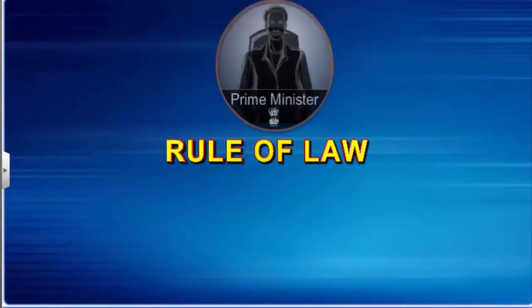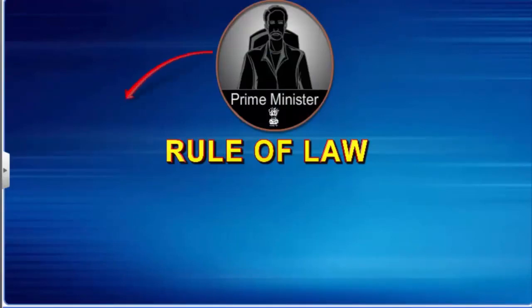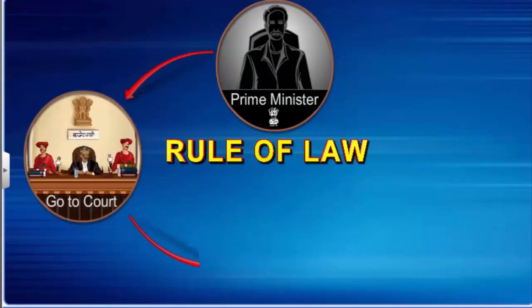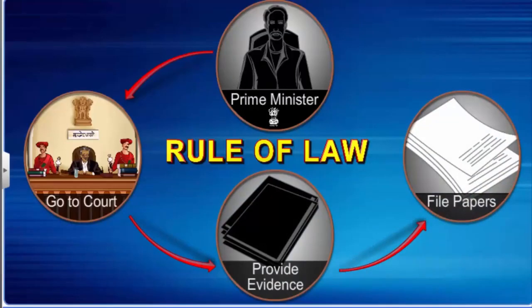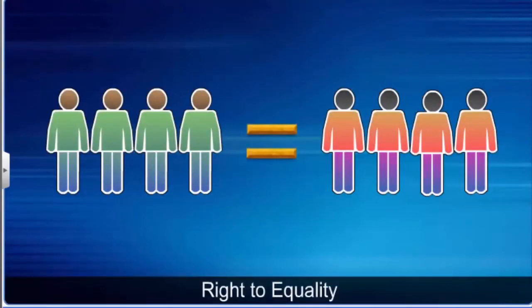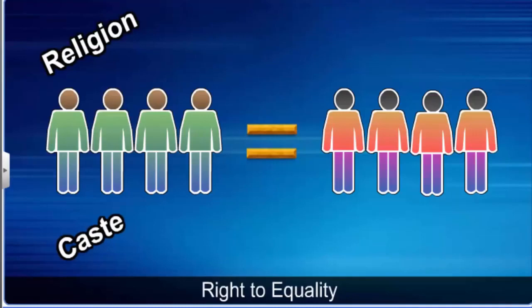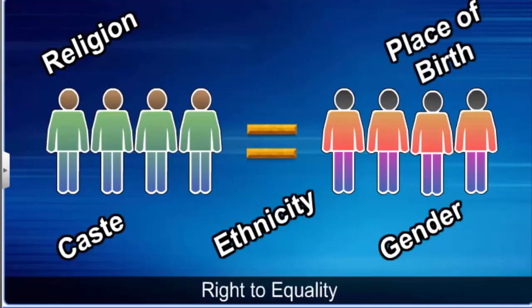According to the rule of law, even the prime minister of the country, in case of charges against him, will have to go to court, give evidence, and file papers without any special treatment. The right to equality also states that the government cannot discriminate among citizens on the grounds of religion, caste, ethnicity, sex, or place of birth.